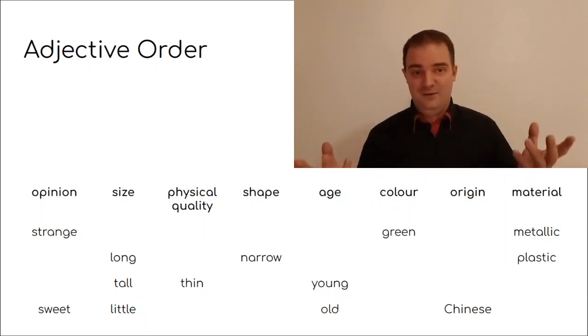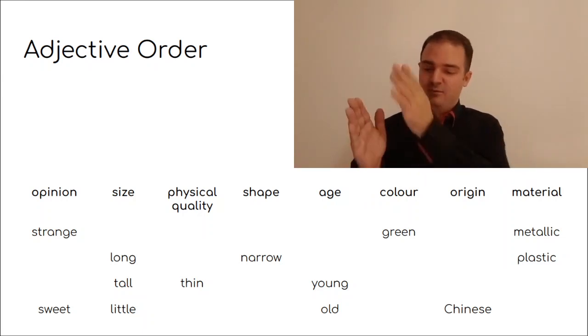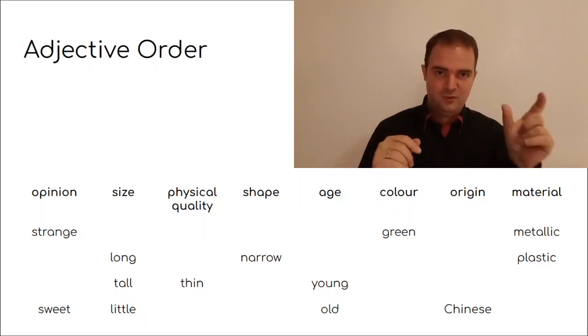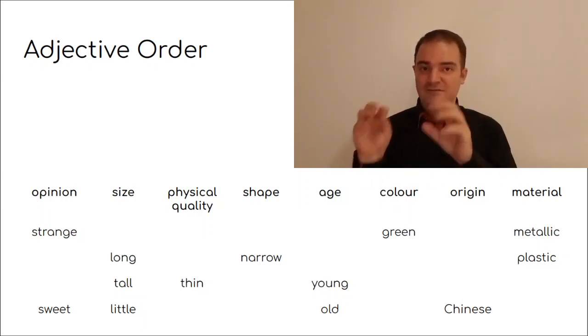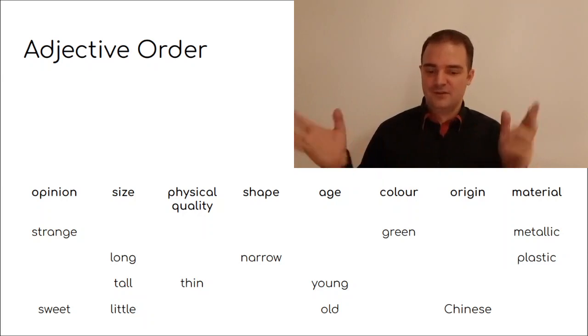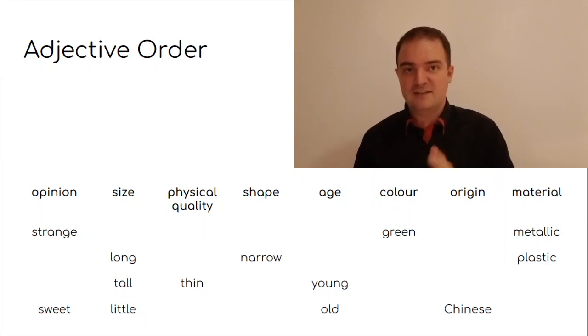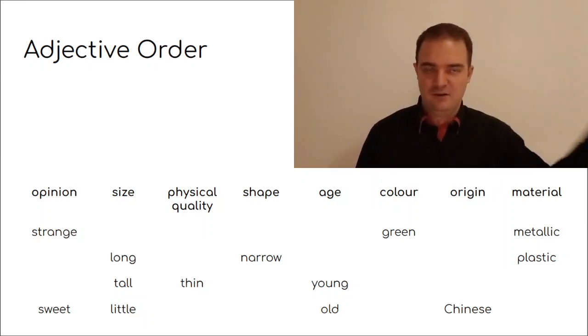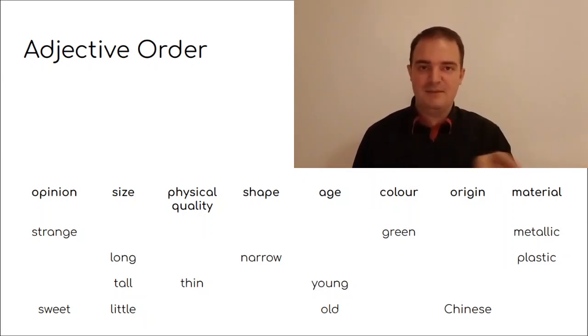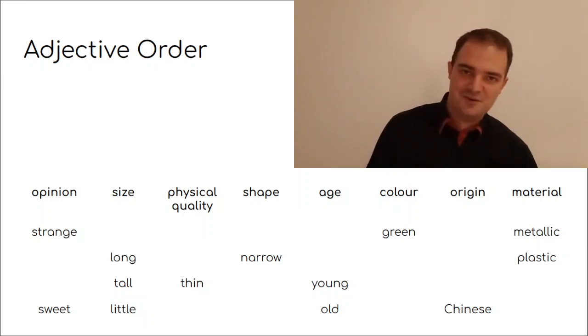Now, I didn't know this, but in English when you have more than one adjective before a word, they have to go in a specific order. So for example, if you have a strange green metallic object, it must be a strange green metallic object. You can't say it's a metallic green strange object.